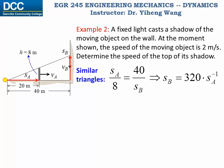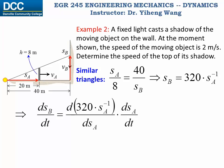And now we can differentiate this entire equation with respect to time. The left-hand side is simply dSB/dt, which is the velocity VB that we are looking for. The right-hand side, to take the differentiation with respect to time, we can apply the chain rule from calculus. So we find the differentiation of 320 times SA to the negative first power with respect to SA, and then multiply that by dSA/dt. And dSA/dt is the velocity VA that's given.